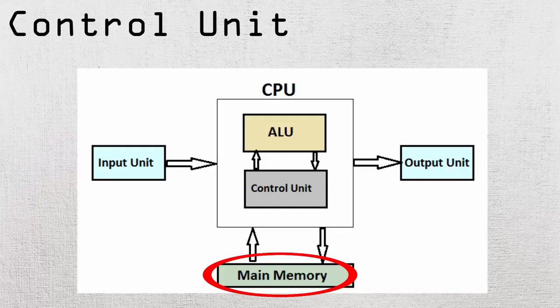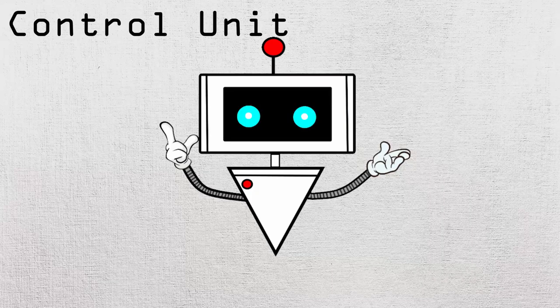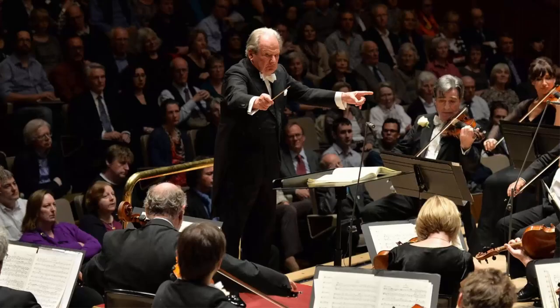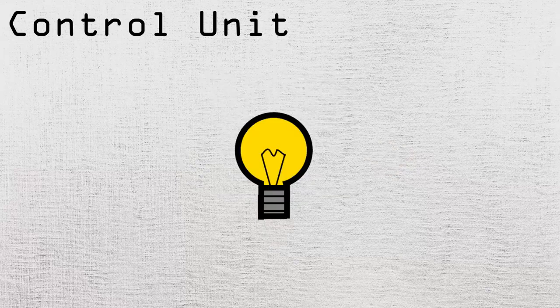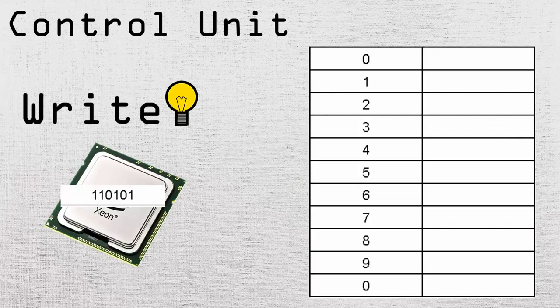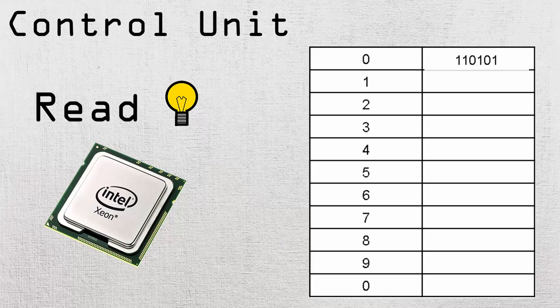Now that the memory unit is done, let's get into the control unit. Like I said in a previous video, this unit is like the conductor of an orchestra — it tells how the information should act and where it should go. The control unit can give out control signals which tell the CPU what to do with the information. If the write signal is on, it tells the CPU that this piece of information needs to be stored at a given address in the RAM. If the read signal is on, it tells the CPU that it needs to load information from a given address.